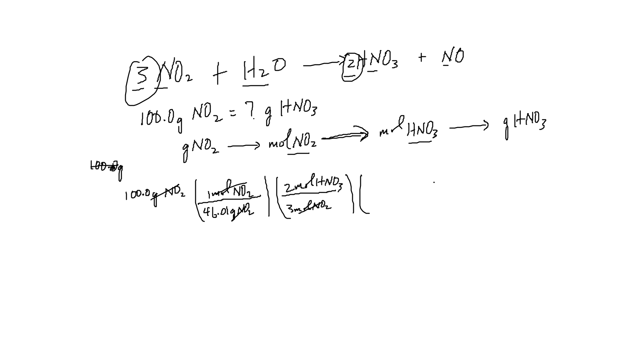And then the next step is where we go from moles of nitric acid to grams of nitric acid. And again, we're going to need a molar mass, this time of nitric acid. So one mole of HNO3 would go below. And above, you're going to have the molar mass of HNO3, hydrogen, nitrogen, and three oxygens. And nitrogen is 14.01. Hydrogen is 1.01.